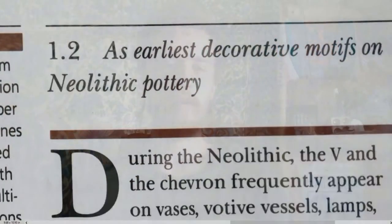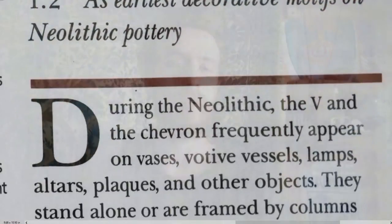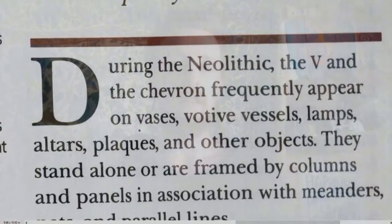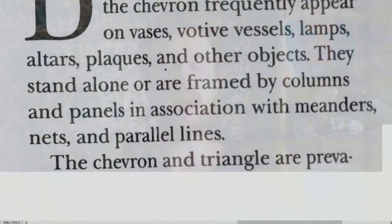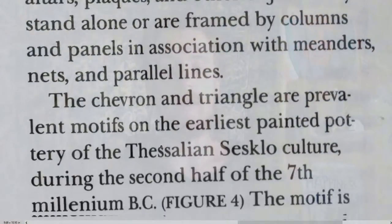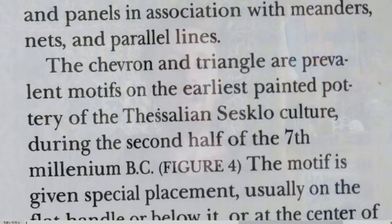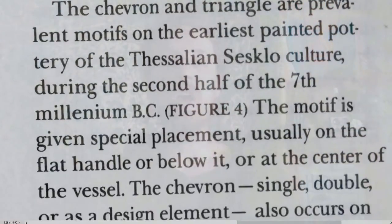Section 1.2: As Earliest Decorative Motifs on Neolithic Pottery. During the Neolithic, the V and chevron frequently appear on vases, votive vessels, lamps, altars, plaques, and other objects. They stand alone or are framed by columns and panels in association with meanders, nets, and parallel lines.